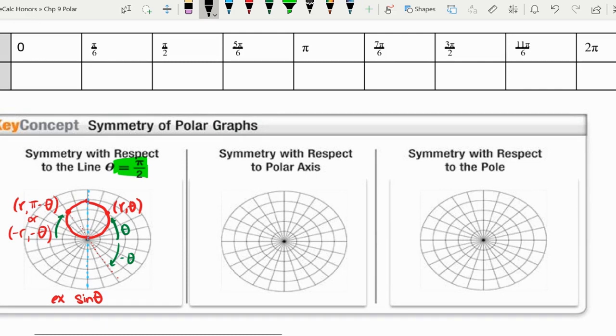For polar graphs, if the point fails the symmetry test, or if a symmetry test fails, it doesn't mean there isn't symmetry. But for this one, like we did way back in chapter one.